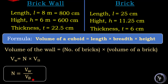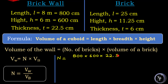Now let us substitute these values and find the number of bricks. Number of bricks N equals, in the numerator, the volume of the wall: 800 into 600 into 22.5. In the denominator, the volume of a brick: 25 into 11.25 into 6. Now let us simplify this fraction.